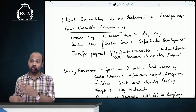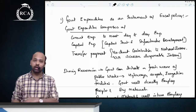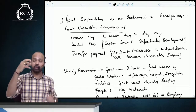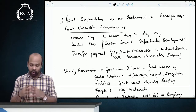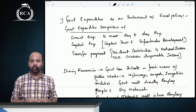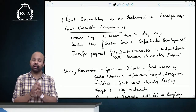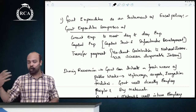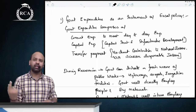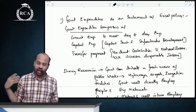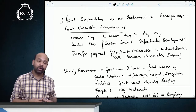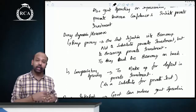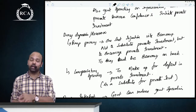Government expenditure includes current expenditure, capital expenditure, and transfer payments. Transfer payments do not contribute to national income as they are unilateral payments without any productive service received. During recession, government will initiate a fresh wave of public works — directly employing people or buying materials. This creates a multiplier effect and adds to economic activity. When the government builds infrastructure, it boosts public and private business confidence, encouraging further private investment.